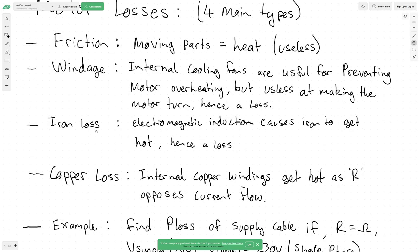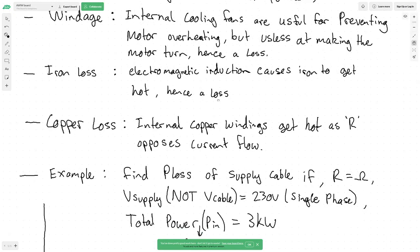The third is iron loss. This will be covered more at level two when we get into electromagnetics and induction. For now, all you need to know is that electromagnetic induction causes the iron inside the motor to get hot. Since that heat doesn't contribute to our task, it's a loss. There are many good YouTube videos on this if you're curious — and you will have to learn it eventually.